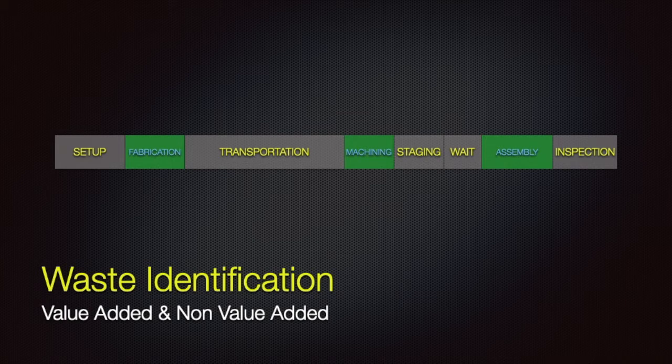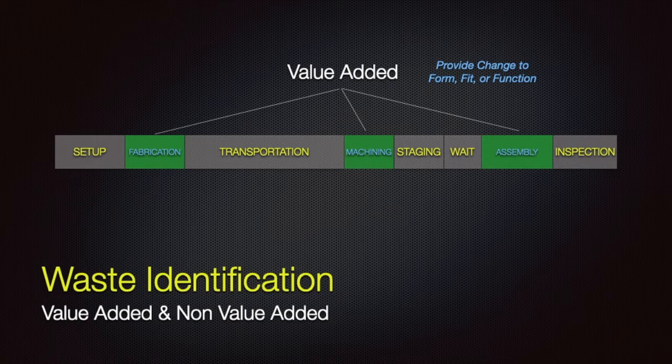And the first thing we need to do is to determine what is value added and what is non-value added. Obviously, you can see I did the work for you here, at least starting out. Now, the value added steps would be the green boxes. The green boxes there. There's three of them. These are processes that actually change the form, fit, or function of the product or service. So everything else in that timeline is actually non-value added or waste.